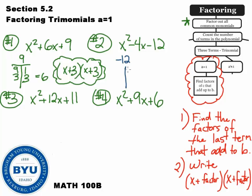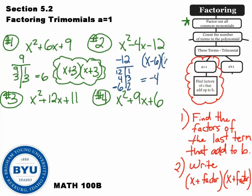For the second problem, c is negative 12, and I'm looking for the factors of negative 12 that give me negative 4. Factors of 12: there's 12 and 1, then 4 and 3, then 6 and 2. I think 6 and 2 will work. I'm trying to get negative 4, so I need to make the 6 negative. My final answer is x minus 6 and x plus 2. You can distribute these out if you want to verify.